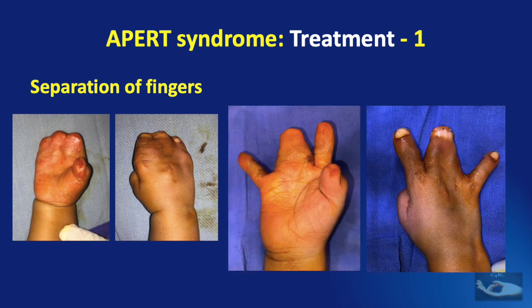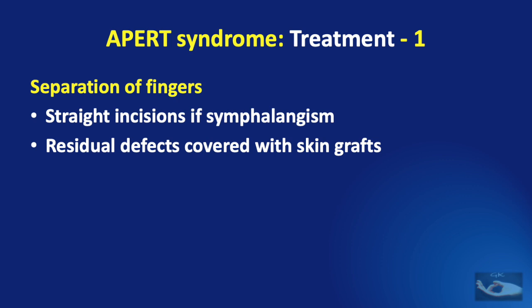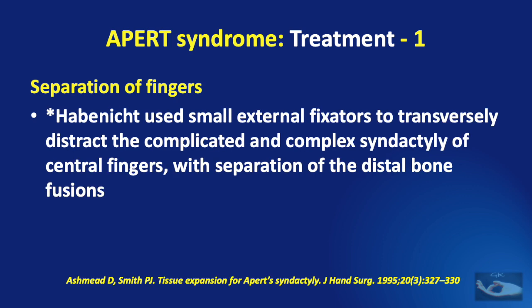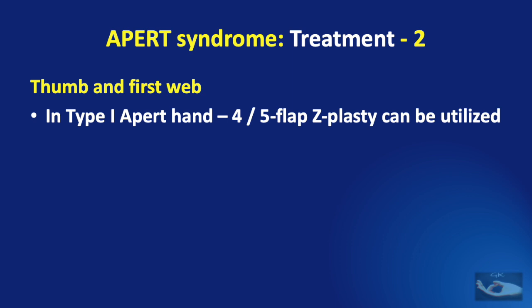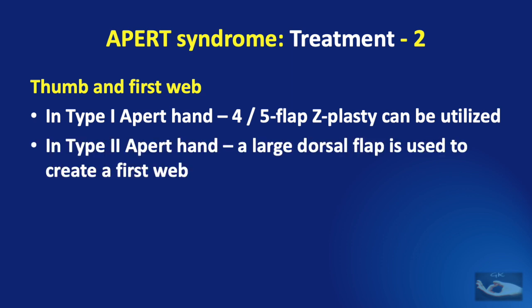This is the result at the end of two stages — what remains is release of the syndactyly between the middle and ring fingers and deepening of the thumb web. If there is symphalangism, there is no need for zigzag incisions; straight incisions can be made to release the syndactyly. Residual defects are usually covered with full-thickness skin grafts taken from the groin region. Habinichet used small external fixators to transversely distract complicated complex syndactyly of central fingers with separation of distal bone fusions. For releasing and deepening the thumb web in Type 1 Apert hand, a 4 or 5 flap Z-plasty can be utilized; for Type 2, a large dorsal flap is used to create a first web.